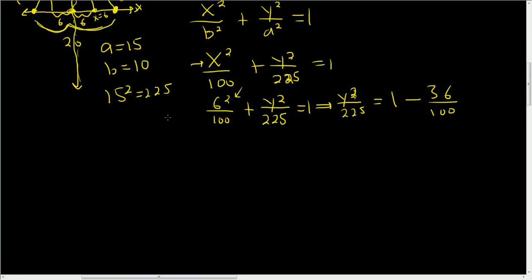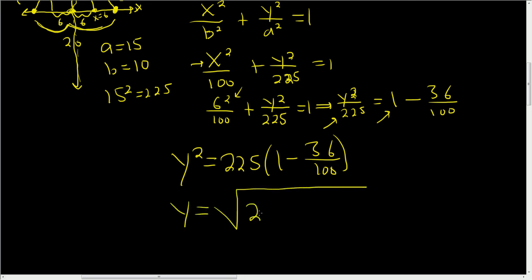So we end up with y squared equals, multiply this by 225 and multiply this by 225. So you get 225 times 1 minus 36 over 100. Take the square root of both sides. You end up with y equals the square root of 225 times 1 minus 36 over 100. Putting this into the calculator gives exactly 12 feet.